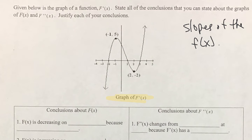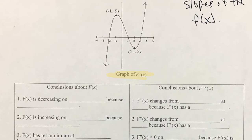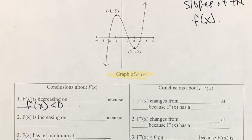We're going to look at our f prime graph and make some inferences about the graph of f. When is the graph of f decreasing? If the graph of f is decreasing, that means its derivative is going to be negative. So where is our f prime graph negative? Here it's negative, which means the interval is to the left of negative 2 and then between 1 and 3.